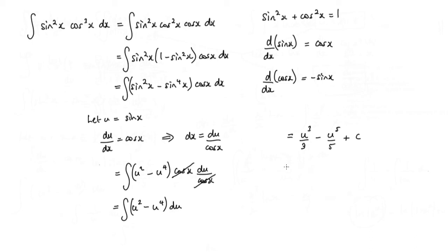Okay, well the last thing I need to do is to substitute back in for u. And I know that u is sin x, so I've got sin³x/3 - sin⁵x/5 + c.